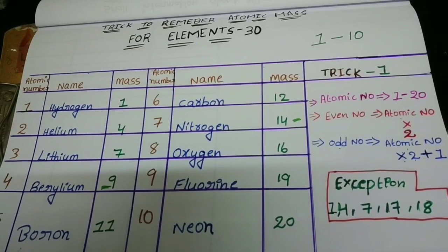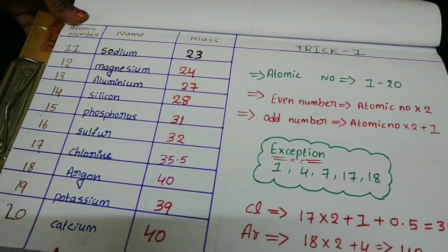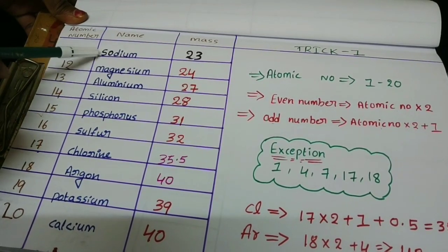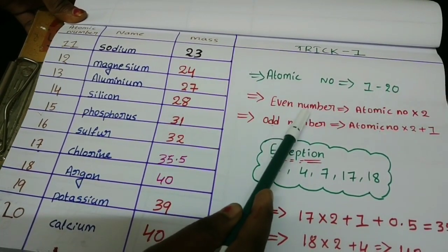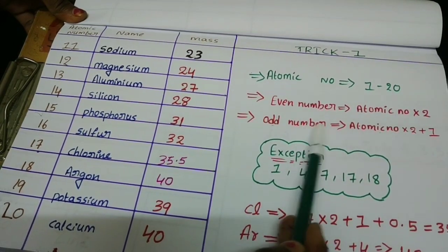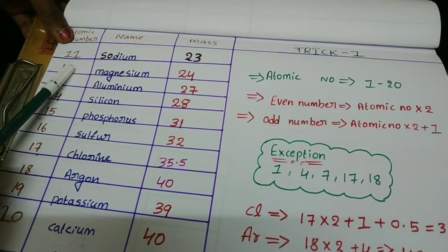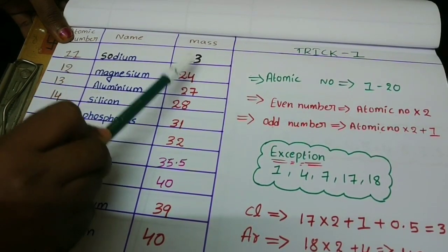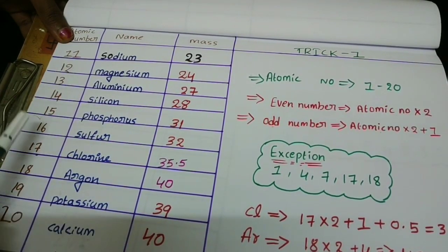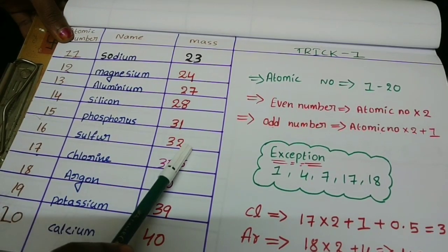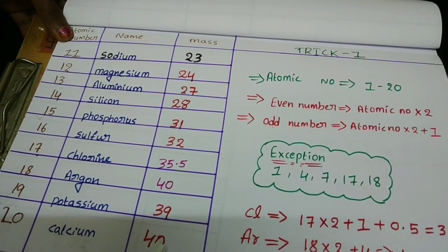Now we have done 1 to 10. Let's do 11 to 20. The elements are sodium, magnesium, aluminium, silicon, phosphorus, sulfur, chlorine, argon, potassium, calcium. Same trick: even number → atomic number × 2; odd number → atomic number × 2 + 1. For magnesium (12): 12 × 2 = 24. 24 is the atomic mass of magnesium. For silicon (14): 14 × 2 = 28. 28 is the silicon atomic mass. For sulfur (16): 16 × 2 = 32. 32 is the sulfur atomic mass. Argon (18) is an exception. For calcium (20): 20 × 2 = 40. 40 is the calcium atomic mass.